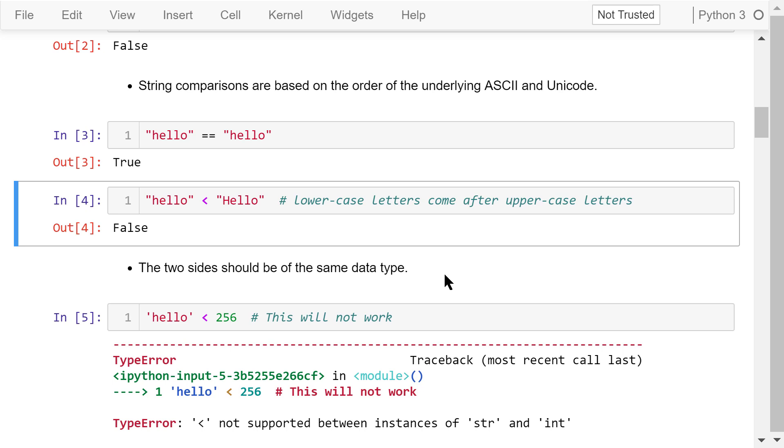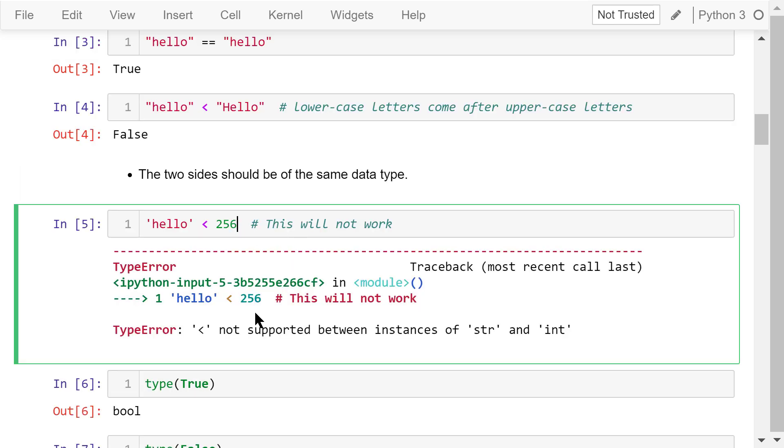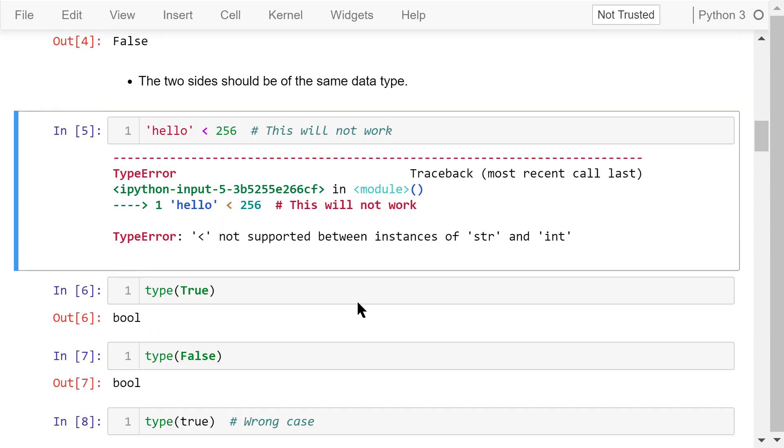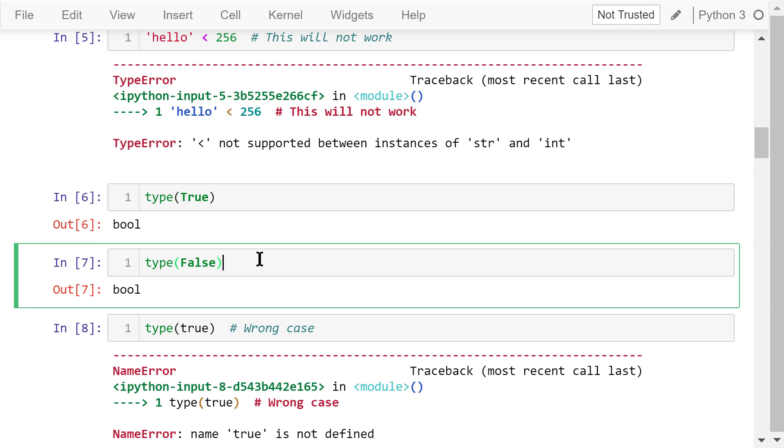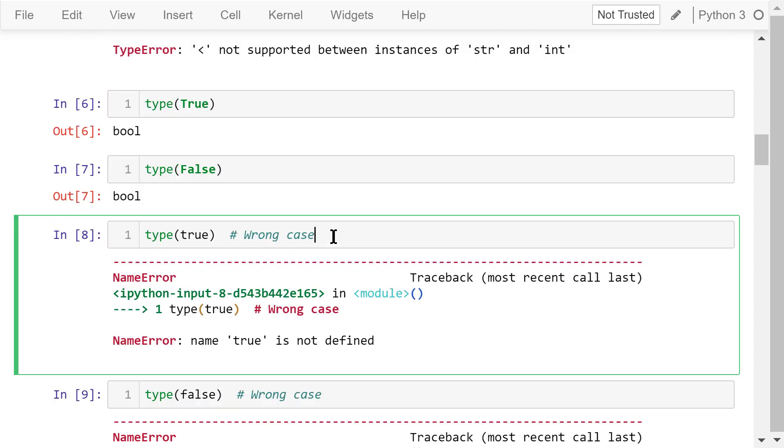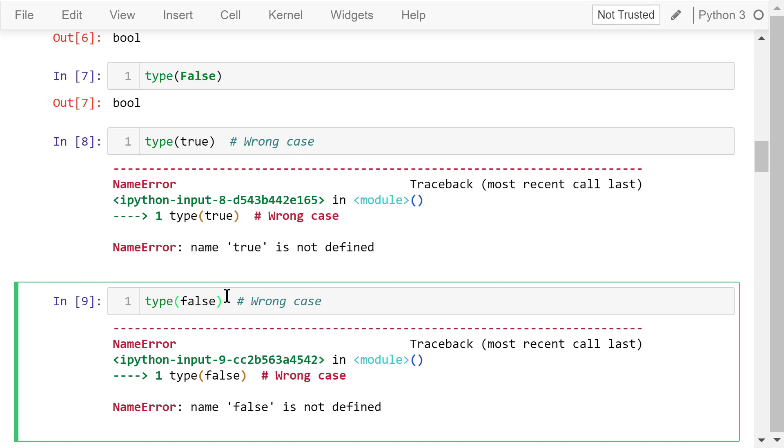When we do the comparison, we should always compare strings with strings and numbers with numbers. If we compare hello, which is a string, with 256, which is a number, we will see an error. If we apply the type function on the keyword true or false, we will see they are boolean. These two words are case sensitive. If we change them to lowercase words like these, we will see an error.